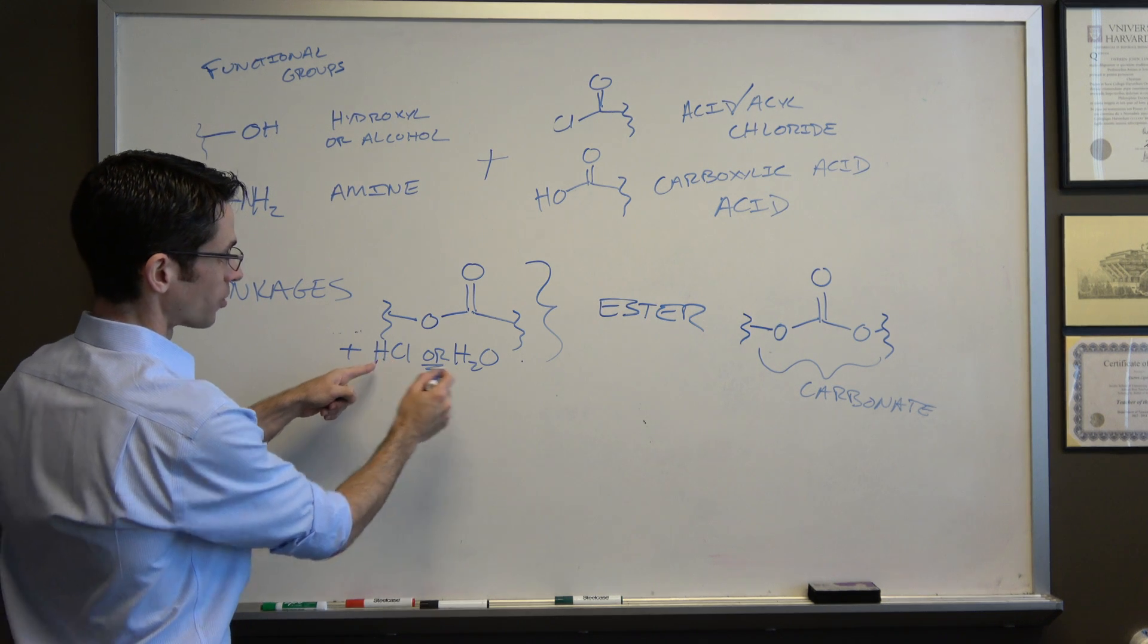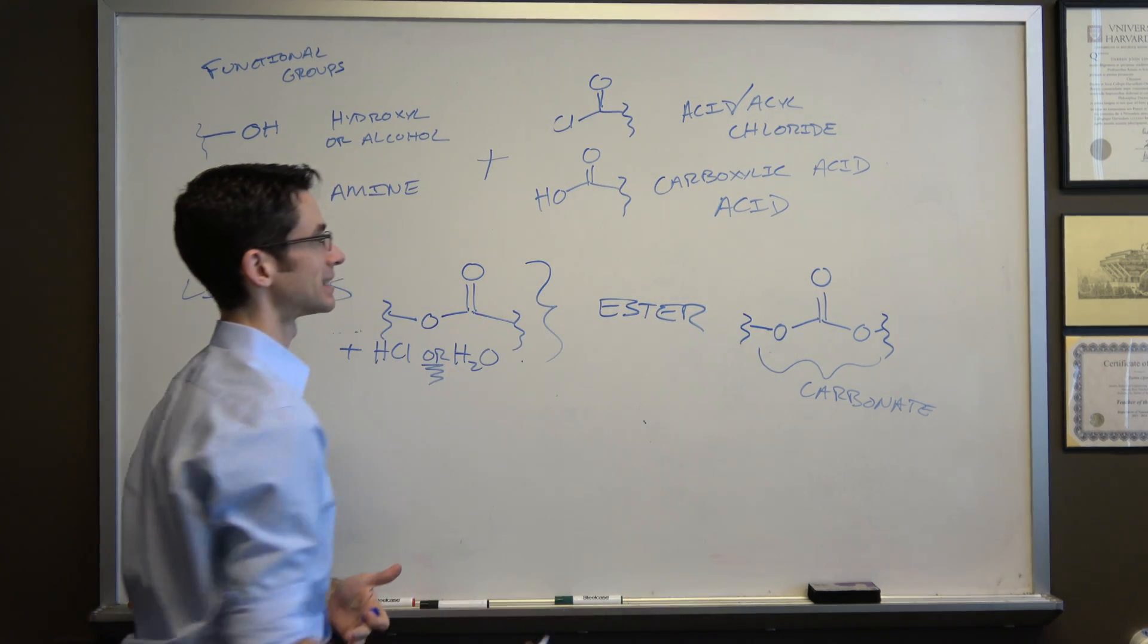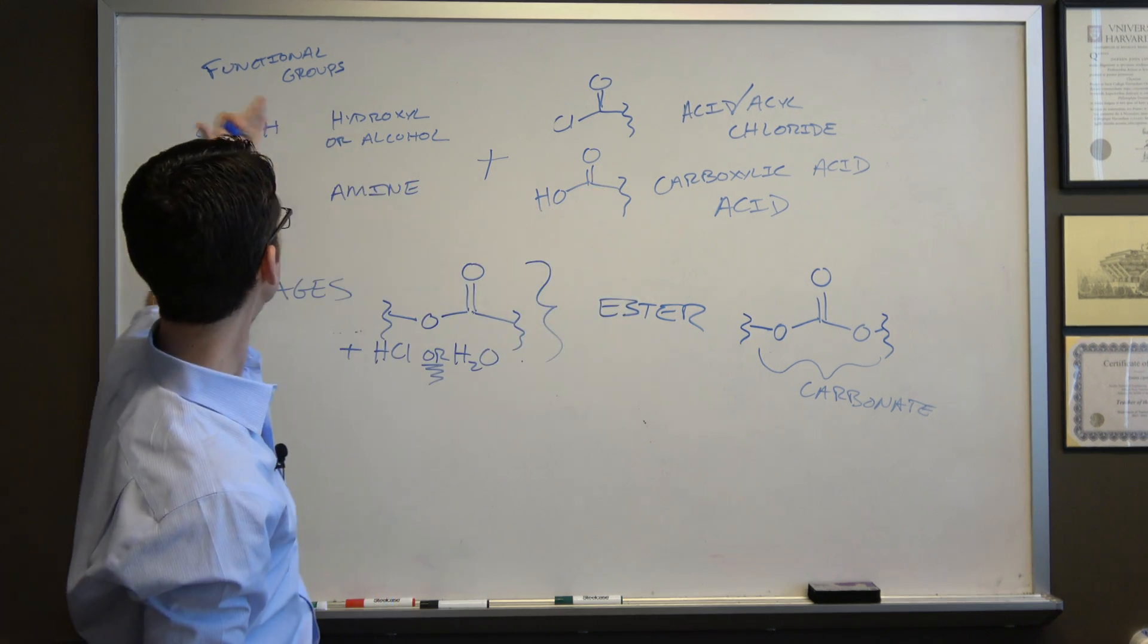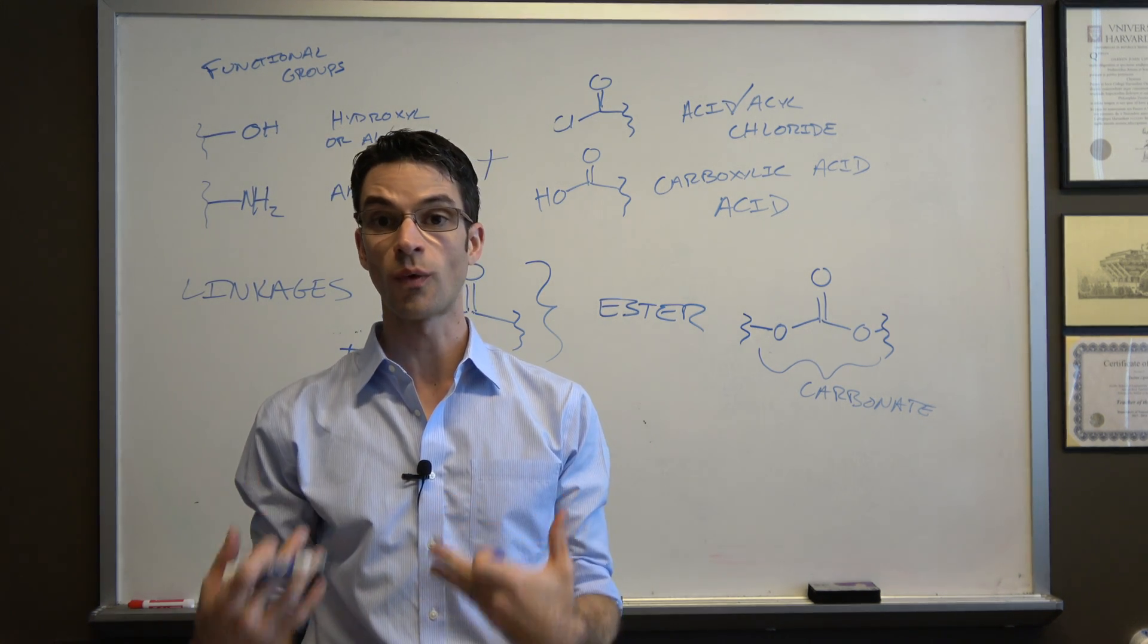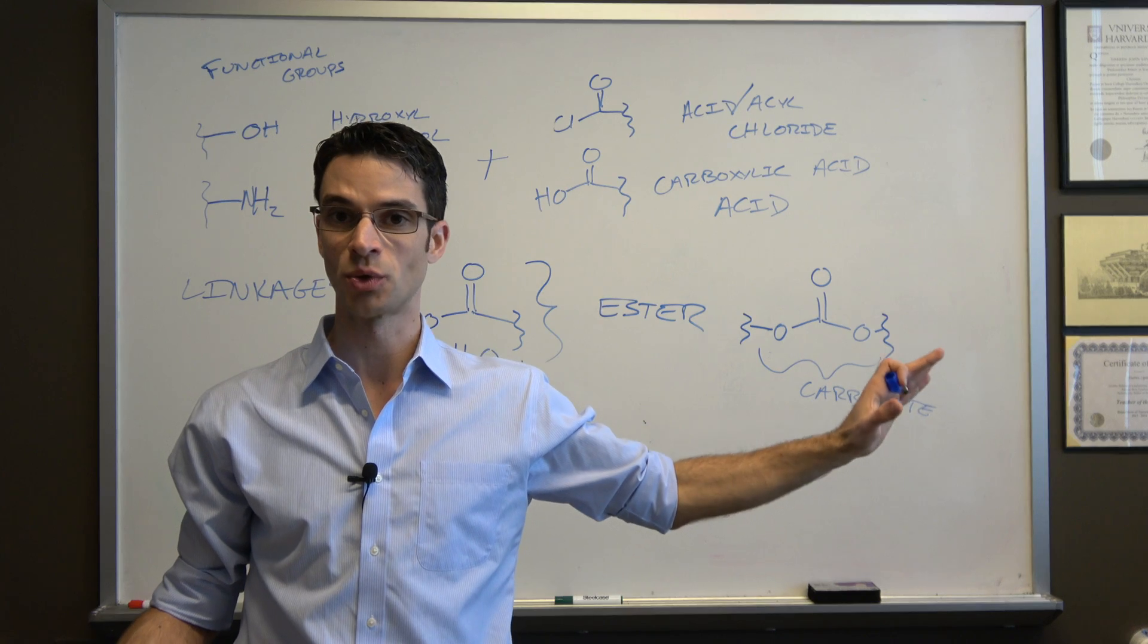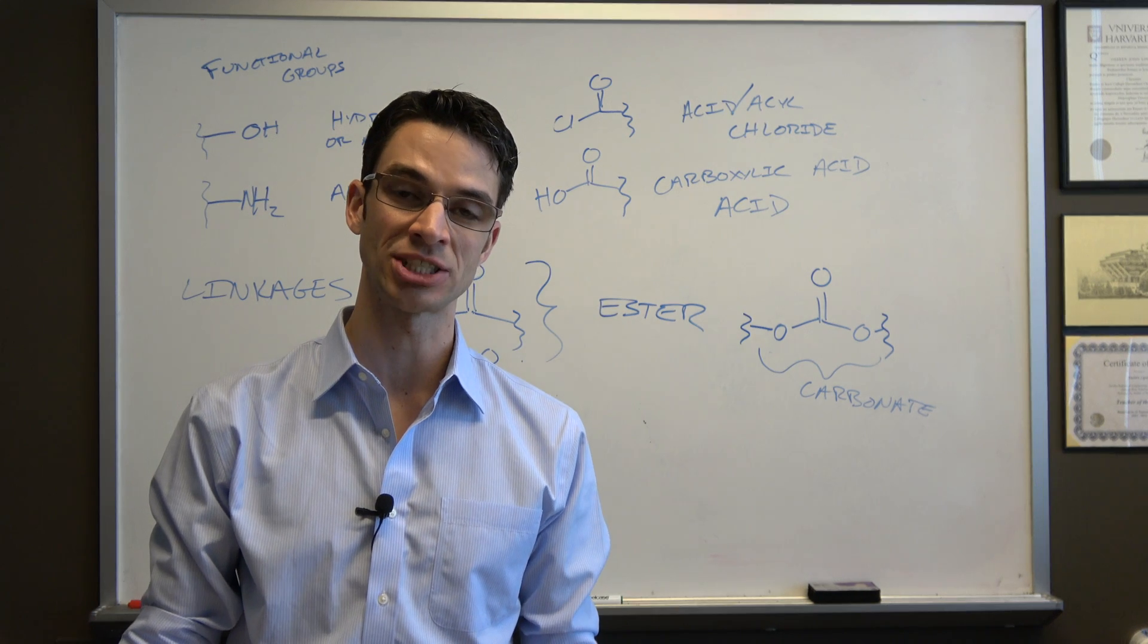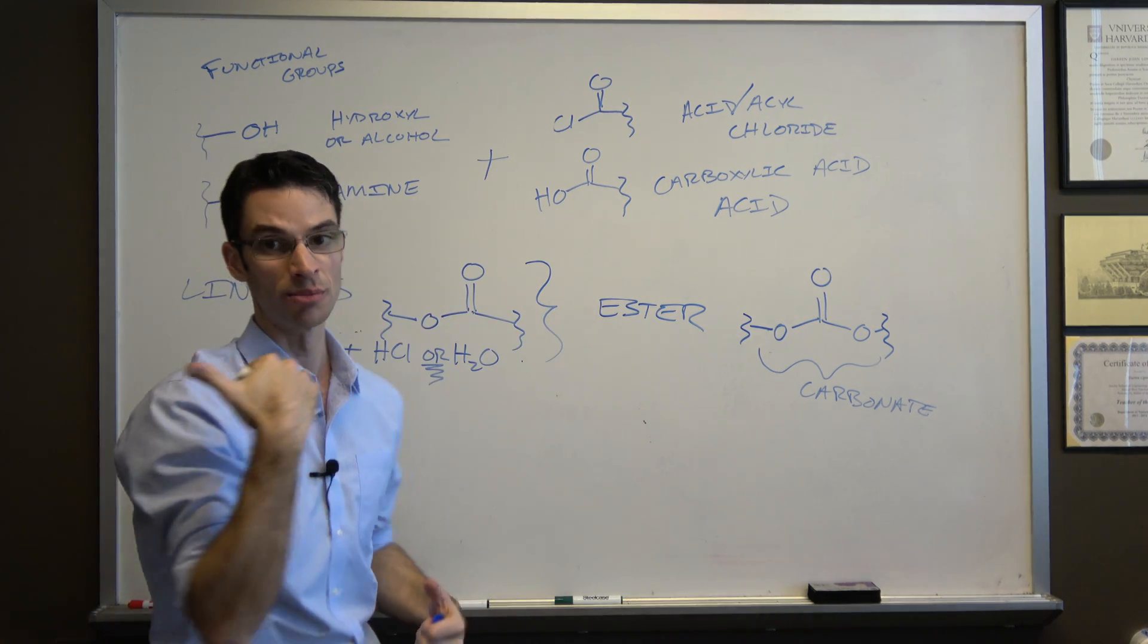Whether or not you get HCl or H2O as the condensation product depends on whether you use the acid chloride or the carboxylic acid. Generally, the acid chloride is a lot more reactive than the carboxylic acid. In order to get the carboxylic acid to react with a hydroxyl or an amine group, you usually need to do this reaction under quite high heat and low pressure to drive off the water as it's formed. In the case of the acid chloride, you usually add in some base to neutralize the HCl as it's formed.